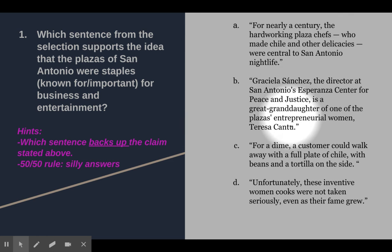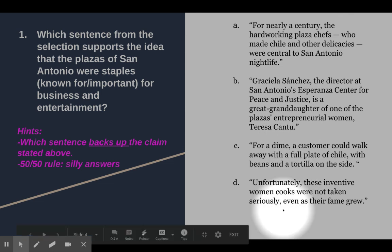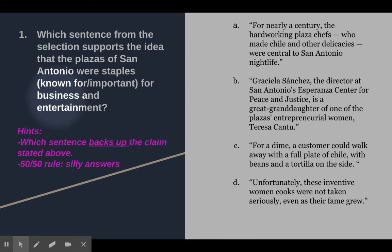You're going to look at your answer choices, and you're going to look at which statement shows and backs up that the plazas in San Antonio were staples for business and entertainment. If you don't know what the word staples means, I have it here in parentheses for you. So, you look at your answer choices, and you're going to look for the one that supports the idea that these plazas in San Antonio were about business and entertainment. On the bottom, I also give you some hints. Don't forget to use the 50-50 rule.